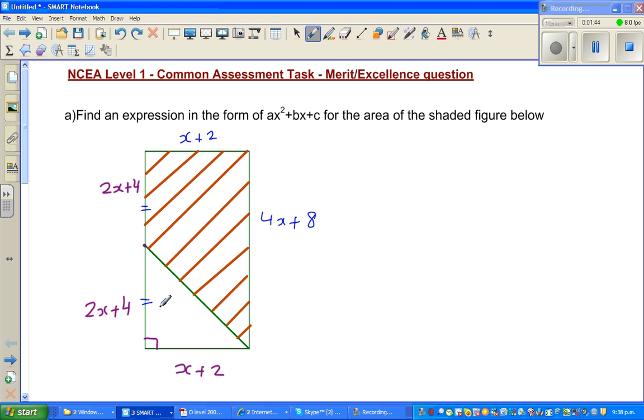So this is 2x + 4, so this would be x + 2, opposite sides of a rectangle. Can I say area of this shaded portion is area of this rectangle minus area of this triangle?